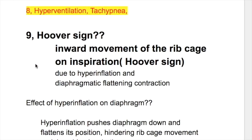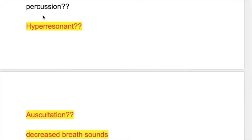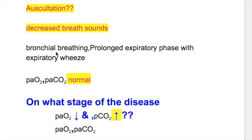Number nine, Hoover sign — inward movement of the rib cage on inspiration. It occurs due to hyperinflation and diaphragmatic flattening. Hyperinflation pushes the diaphragm down and flattens its position, thus hindering rib cage movements and impairing inspiration. The percussion note is hyper-resonant, and on auscultation breath sounds are decreased. There is bronchial breathing with a prolonged expiratory phase and expiratory wheeze.